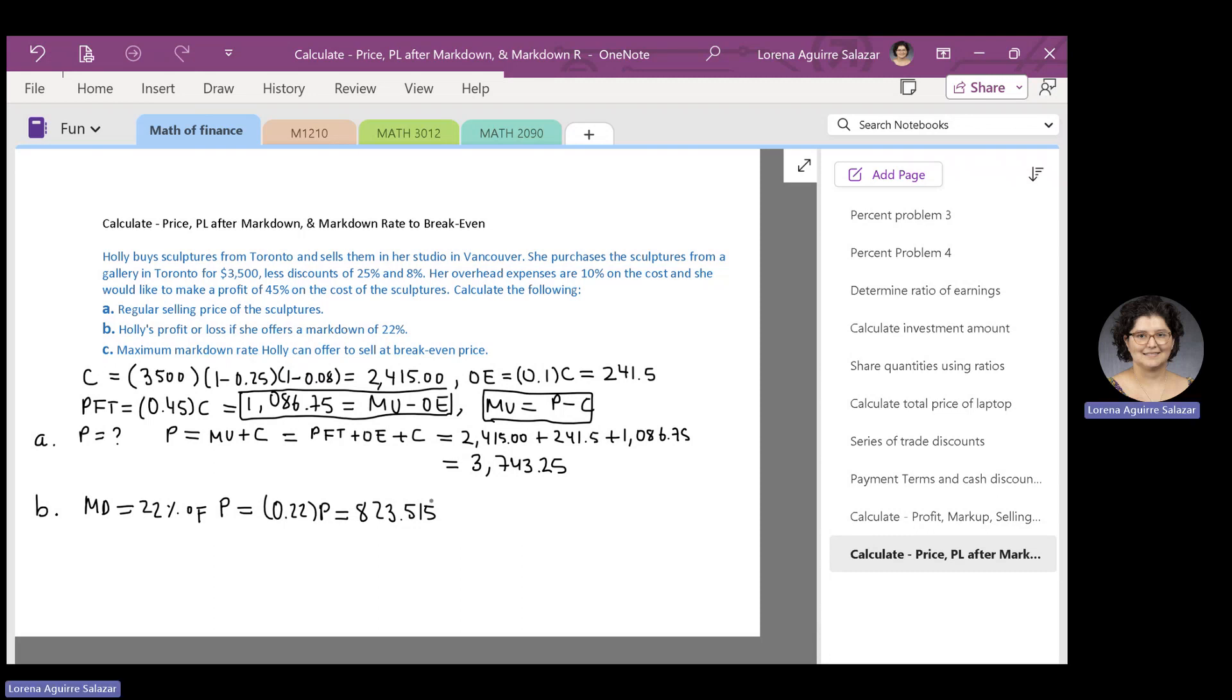Now, if that is the markdown, then the reduced profit that's denoted by PFT sub RED is given by the profit take away the markdown. So, we have the profit, and that is $1,086.75, take away $823.515. So, the reduced profit is given by the number 263.235, which can be rounded off to $263.24.